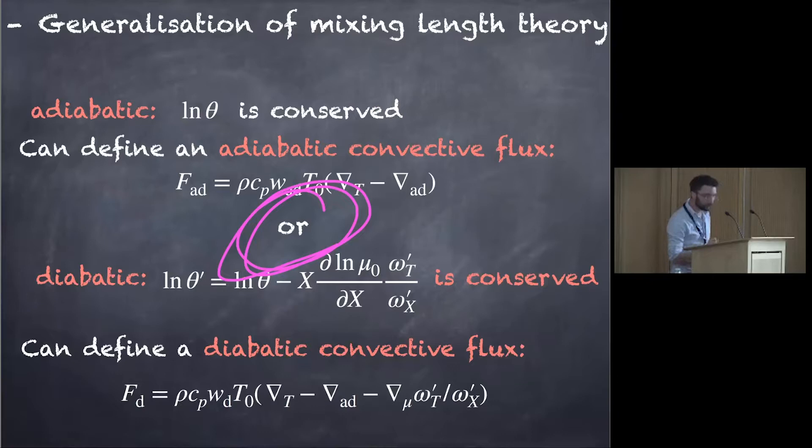The last thing that is very interesting is actually that it's a switch. You can be unstable, either to be unstable to the adiabatic case or the diabatic case, which means that you can have bifurcation in the system.